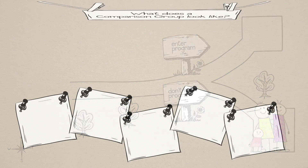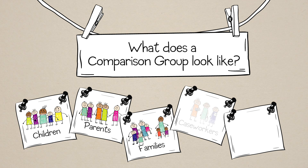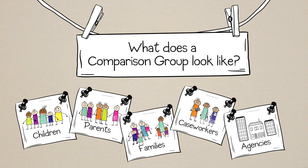So what does a comparison group look like? No matter what we're evaluating, a comparison group will always consist of units — a research term which in child welfare most often refers to children, parents, families, caseworkers, or agencies.